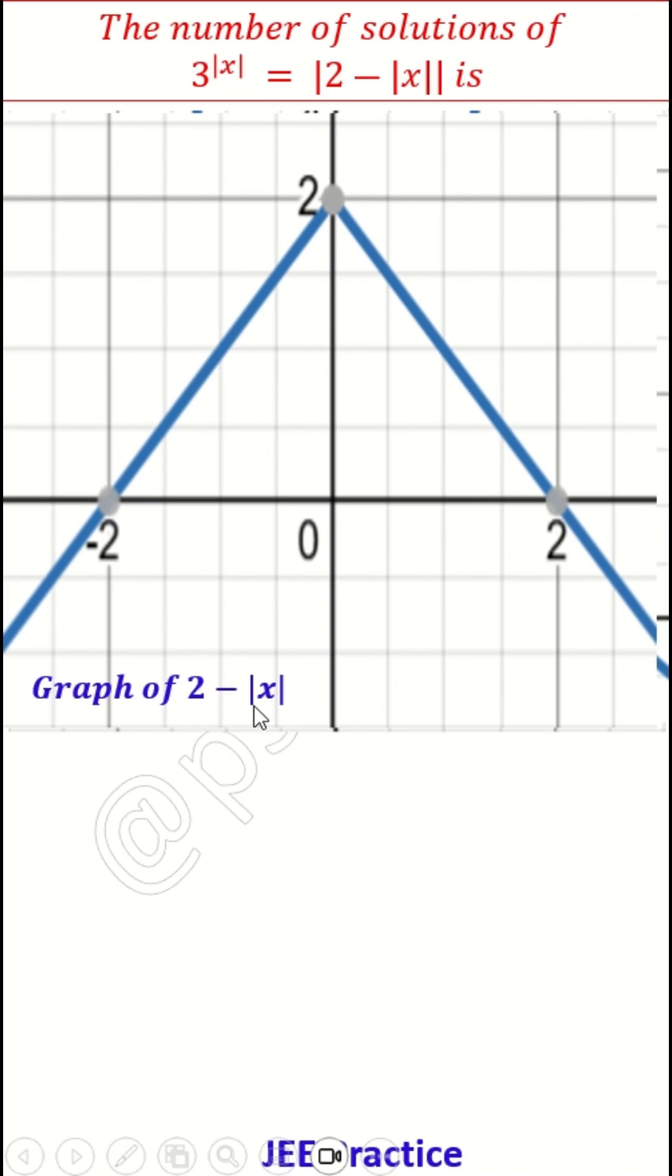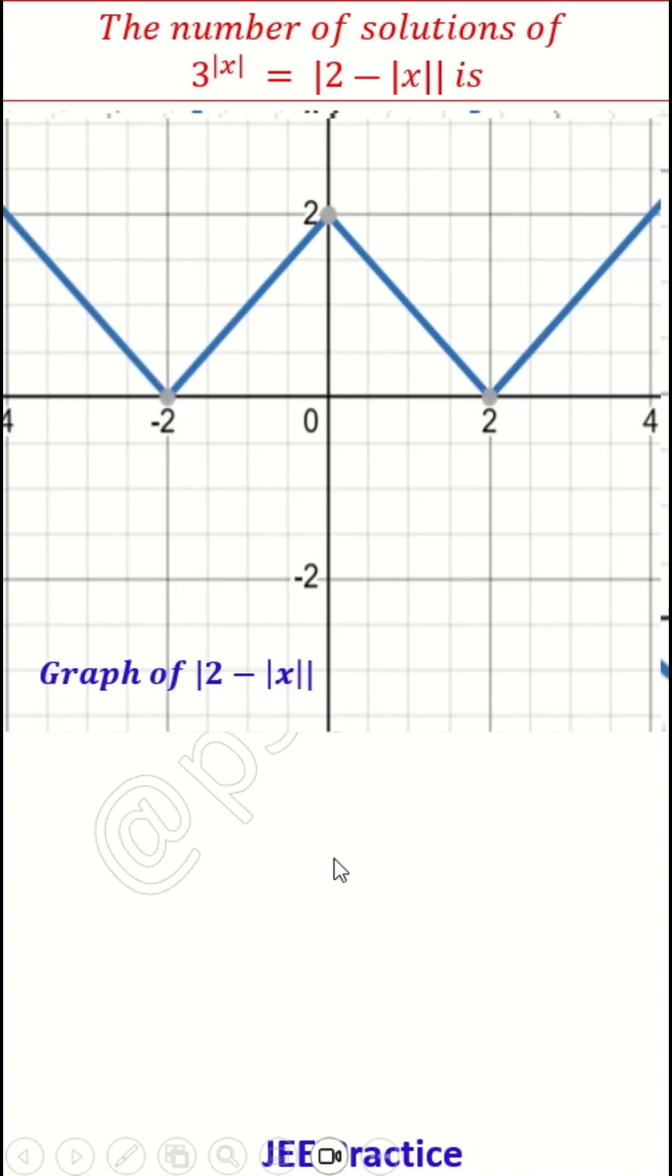Now, absolute 2 minus absolute x is how it looks like. There is no negative value also. This negative value also will go up. So this is how it looks.